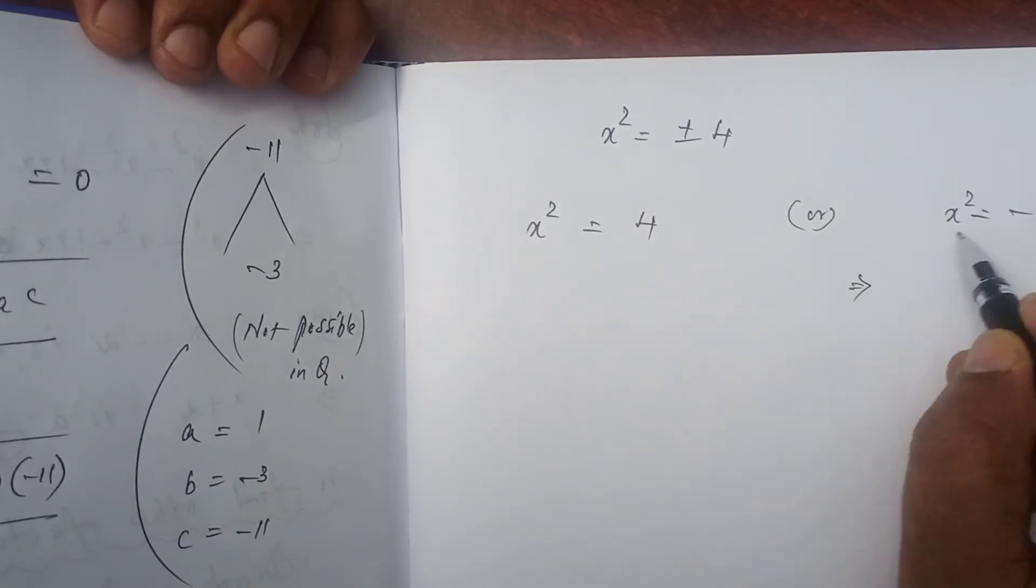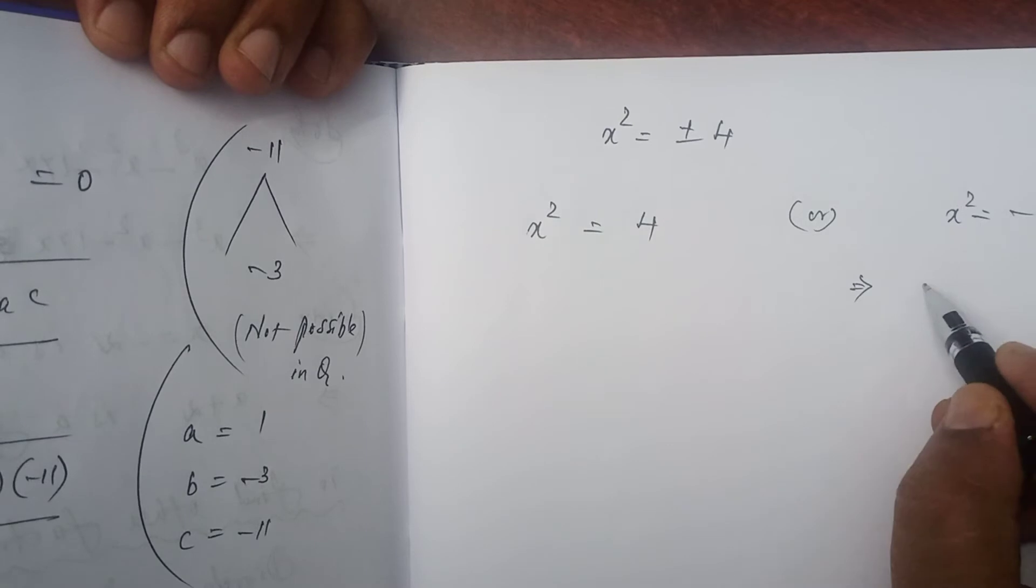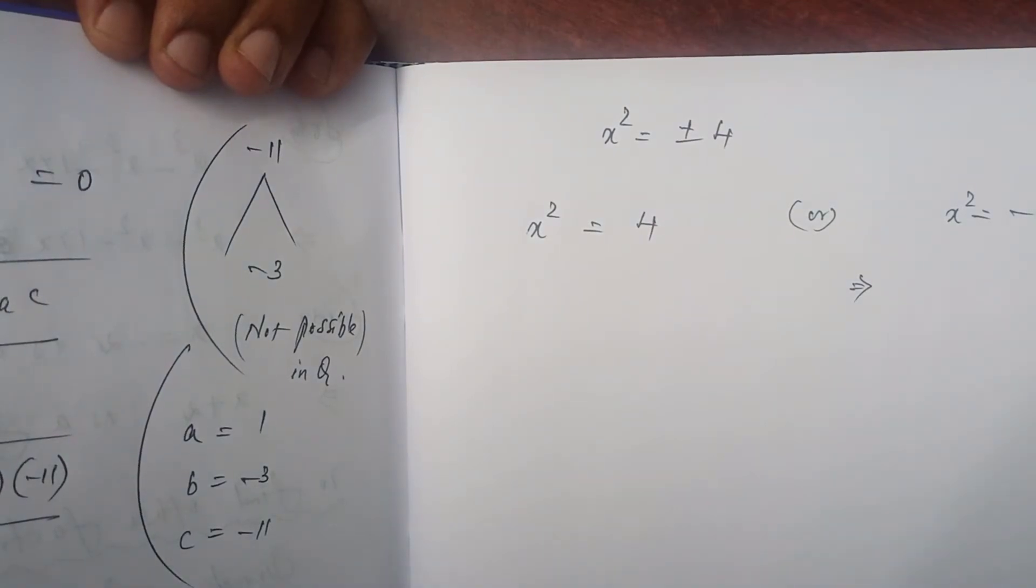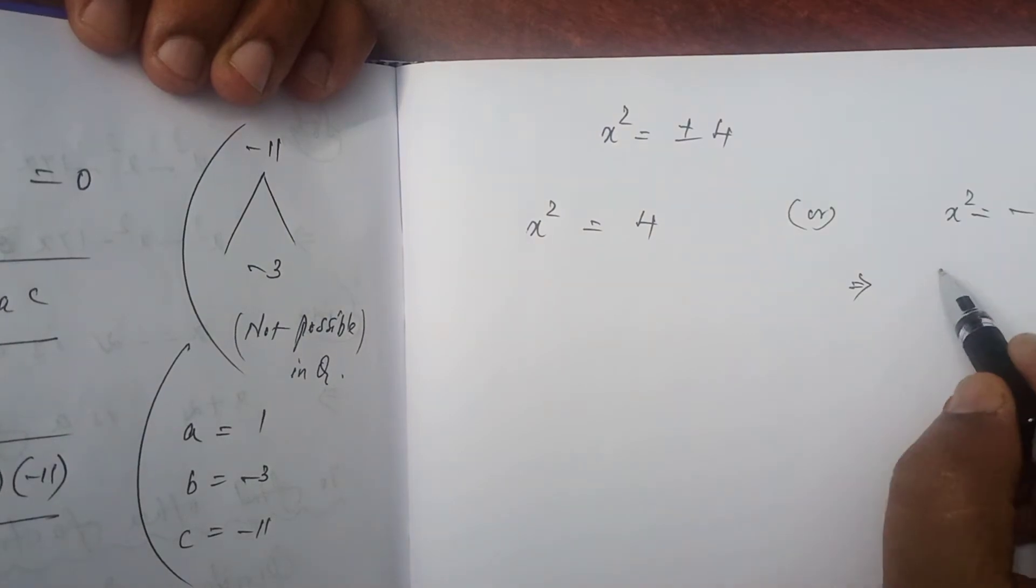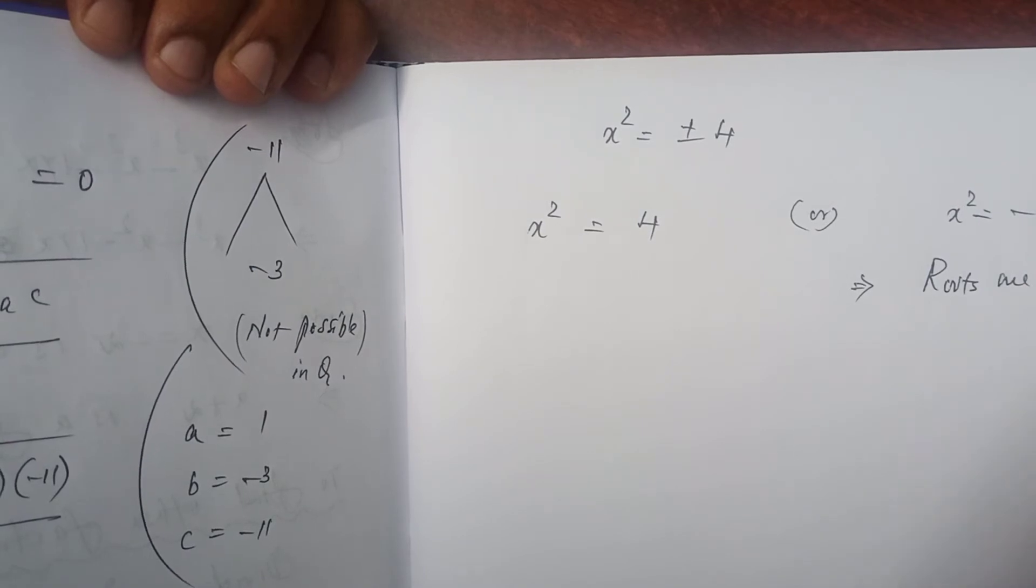If x² is negative, x becomes an imaginary root, complex roots. So we can directly write that these roots are unreal or imaginary.